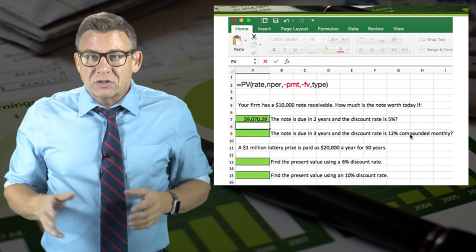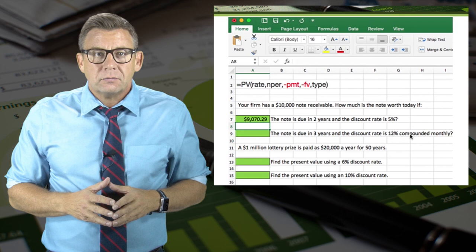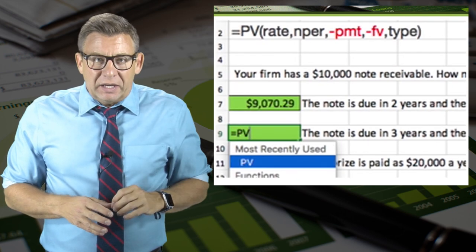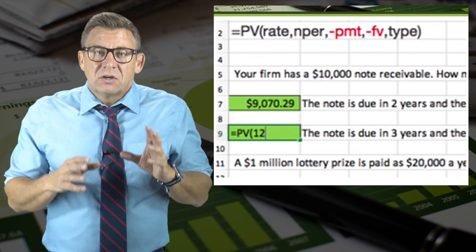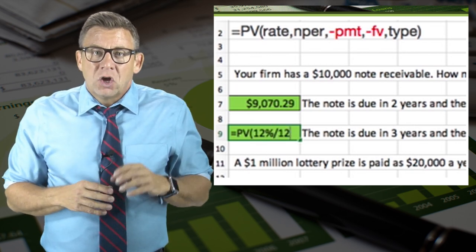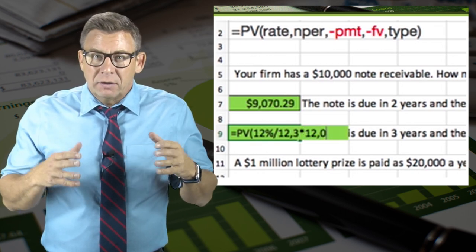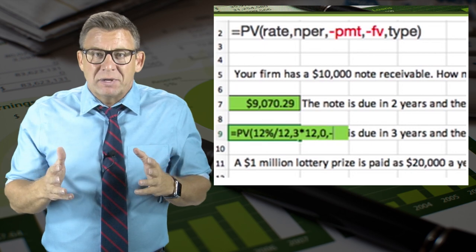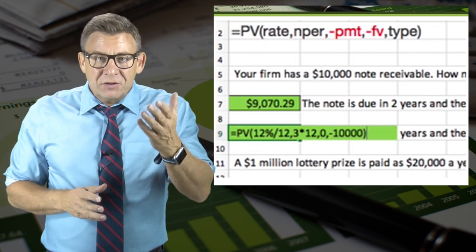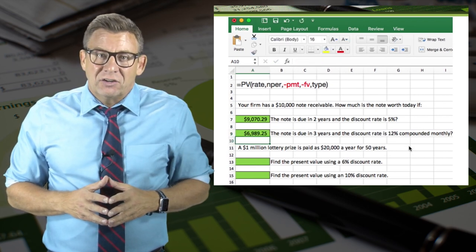And this returns a present value of $9,070.29. Then I enter equals PV, open parentheses, 12% divided by 12, comma, 3 times 12, comma, 0, comma, because again there's no regular payment, and minus $10,000. And this returns a present value of $6,989.25.